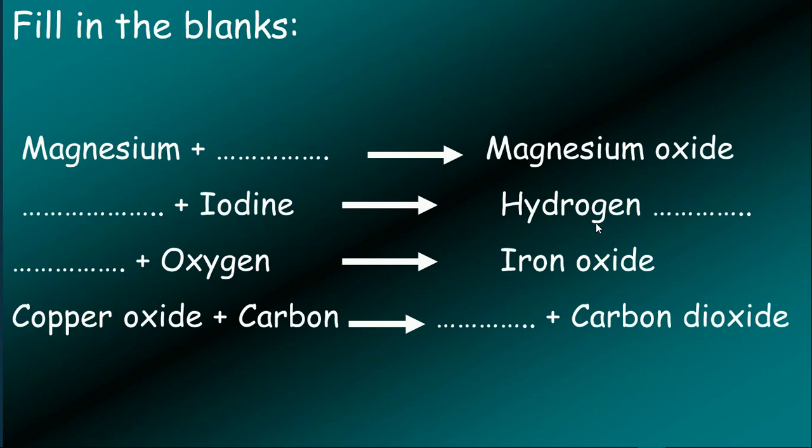How about blank plus iodine will give you hydrogen blank? You can just put hydrogen plus iodine will give you hydrogen iodide. How about the other one? That could be iron plus oxygen will give you iron oxide. And if you're going to combine copper oxide plus carbon, that would be copper plus carbon dioxide. Great job.